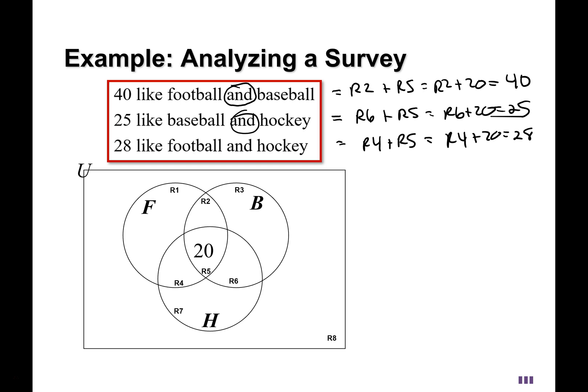So that'll give us what each of these regions are. Just take away 20 from these numbers, basically. And when you take away 20, you'll be left with 20 for region 2. You'll be left with 5 for region 6. And you'll be left with 8 for region 4.